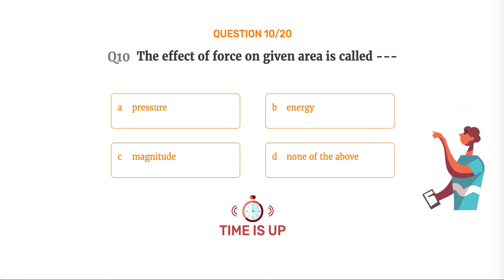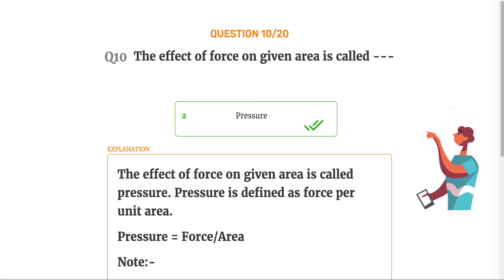The correct answer is Option A: Pressure. The effect of force on a given area is called pressure. Pressure is defined as force per unit area — Pressure = Force / Area. Note: 1. Area less, pressure is more. 2. Area more, pressure is less. 3. Force less, pressure less. 4. Force more, pressure more. It is easier to push a nail into a wooden door through its pointed end than through its blunt end, because the small area of the pointed end helps in creating more pressure and it becomes easier to insert the nail.